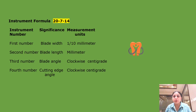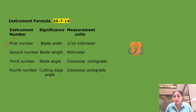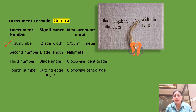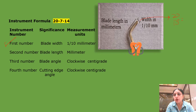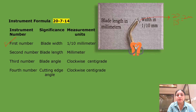Let us discuss each number of the formula in detail. The first number is the blade width, and it is measured in one tenth of a millimeter. So if the first number is 20, it will be 20 divided by 10, which comes to 2 millimeters. So your width is 2 millimeters. The second number is the blade length and it is measured in millimeters.